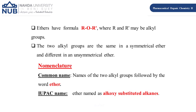When the two alkyl groups are the same, the ether is called a symmetric ether; when they are different, it is an unsymmetric ether. To name ethers, we use the common name: the names of the two alkyl groups followed by the word 'ether'. For example, methyl-O-methyl is dimethyl ether, and ethyl-O-ethyl is diethyl ether.